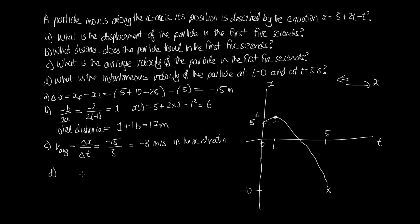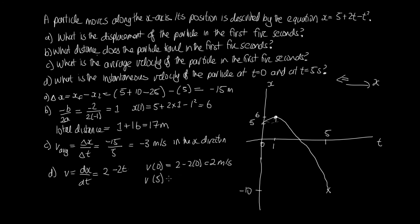Part d asks for the instantaneous velocity at t equals zero and t equals five seconds. To get instantaneous velocity we need dx/dt, so we differentiate the expression for x. Differentiating five gives zero, differentiating 2t gives two, and differentiating minus t squared gives minus 2t. So v equals two minus 2t. At t equals zero, v equals two minus zero, which is two meters per second in the positive x direction. At t equals five, v equals two minus ten, which is minus eight meters per second.